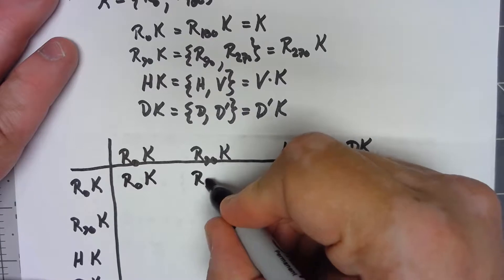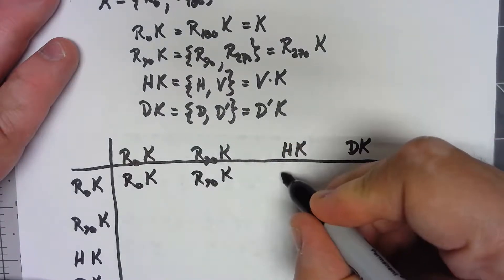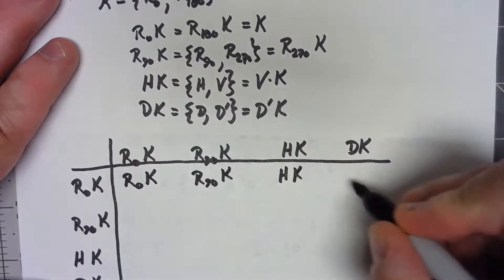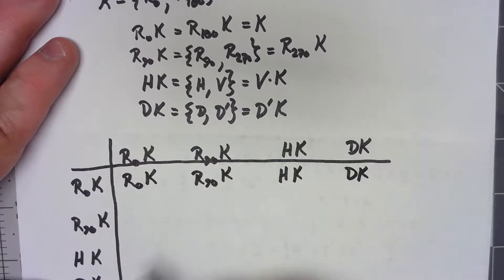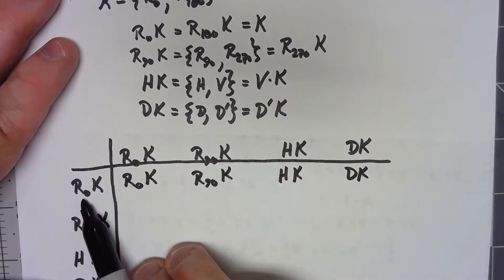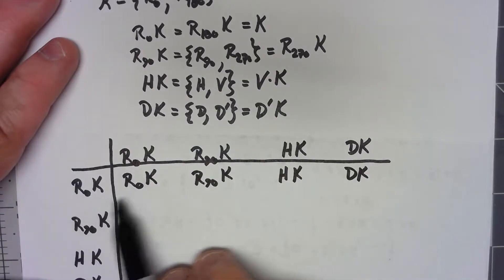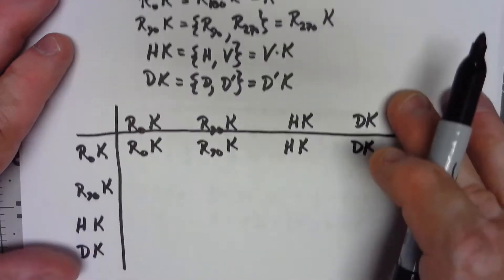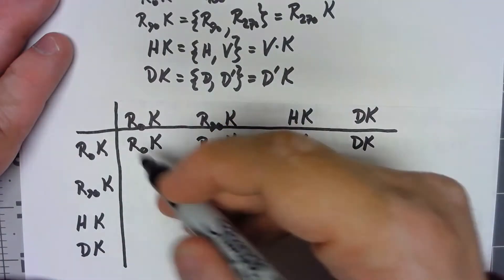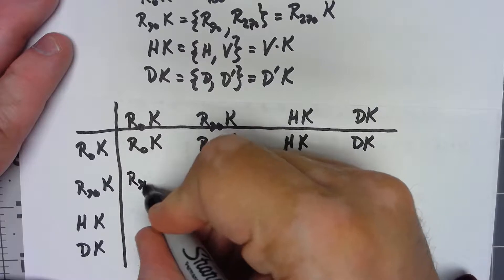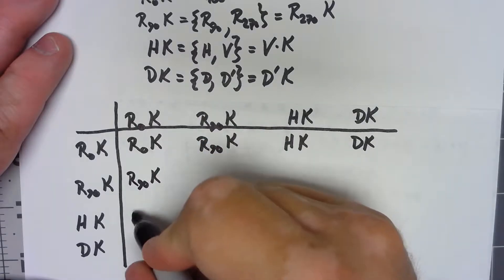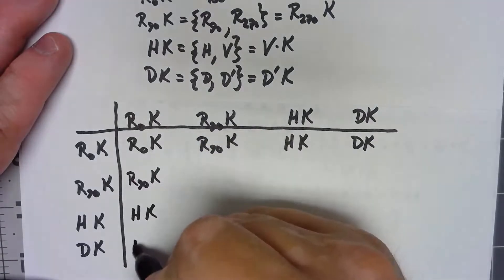Similarly this will be R90K, this will be HK, this will be DK, always because when I'm multiplying by that R0 that's not going to affect what we have. Same thing down here, this will be R90K, this will be HK, and this will be DK.